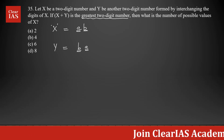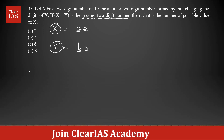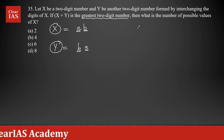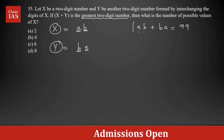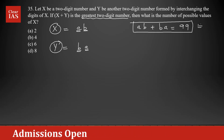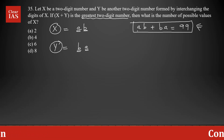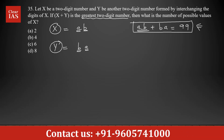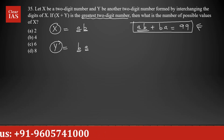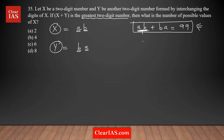There is a common mistake students make — they write ab plus ba equals 99. Can you identify the mistake? In an equation, when you write 'ab', it means a multiplied by b. But that is not correct here. 'ab' represents that two-digit number, and 'ba' represents the reversed two-digit number — it's not a times b or b times a. So this is not the right way to represent it in an equation.